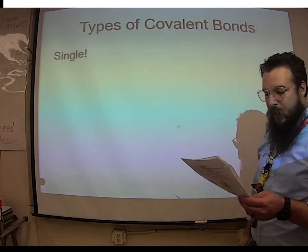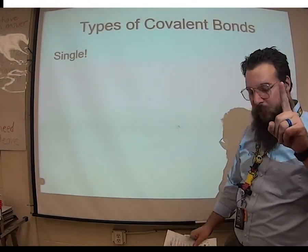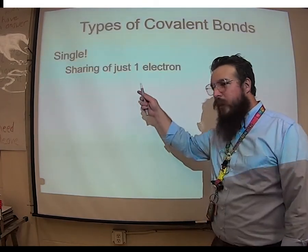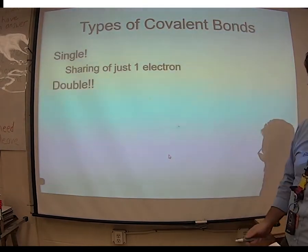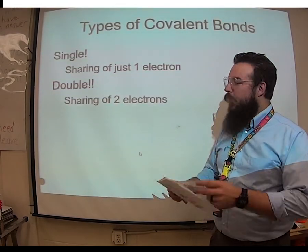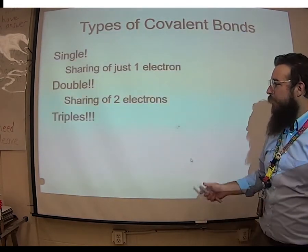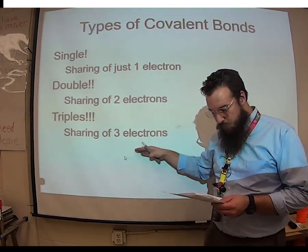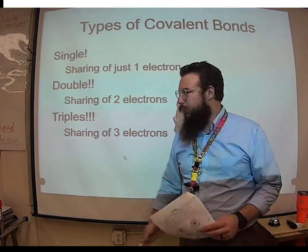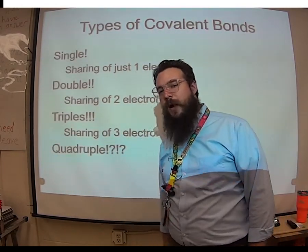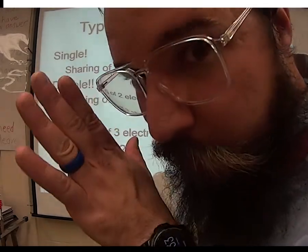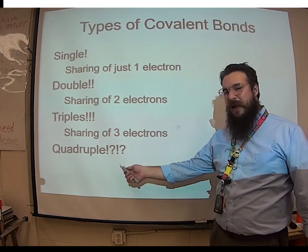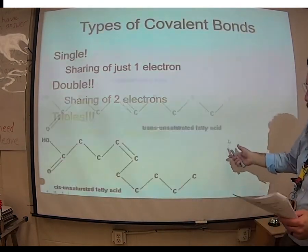In the single covalent bond, we're forming one bond between atoms because we are sharing one pair of electrons. In the double covalent bond, we're sharing two pairs of electrons. And in the triple covalent bond, we are sharing three pairs of electrons. In the quadruple covalent bond — there is no quadruple covalent bond. That's not a thing. That's too many electrons. Doesn't happen.